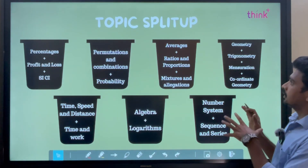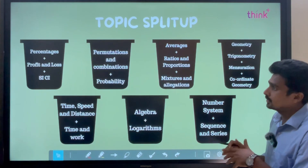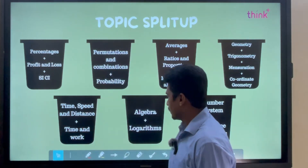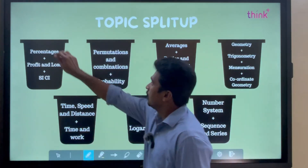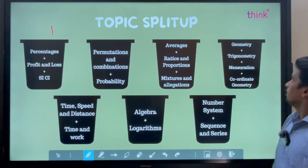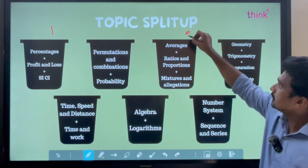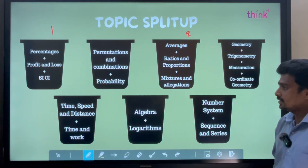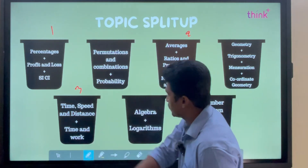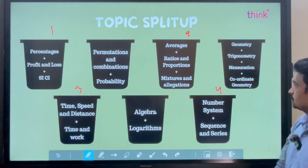The top 4 buckets everyone should be good at: the first is Percentages, Profit and Loss, Simple Interest and Compound Interest — this is preference number 1. Second preference is Averages, Ratio, Proportion, Mixtures and Allegations. Third preference is Time and Distance and Time and Work. And fourth preference is Number Systems, Sequence and Series.